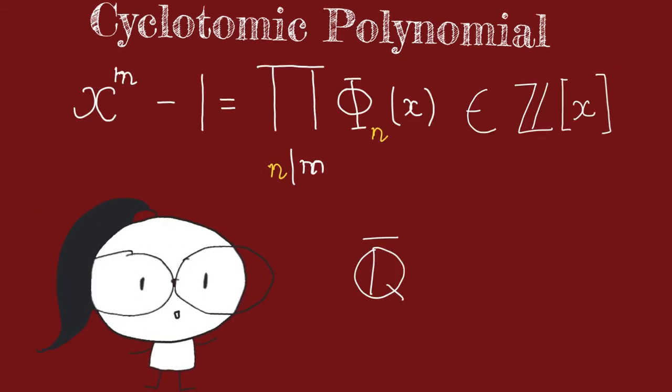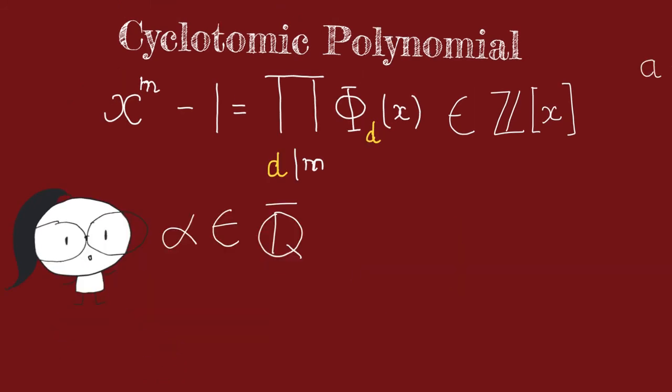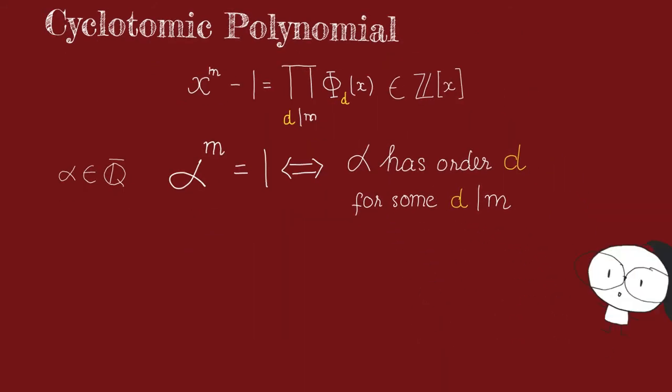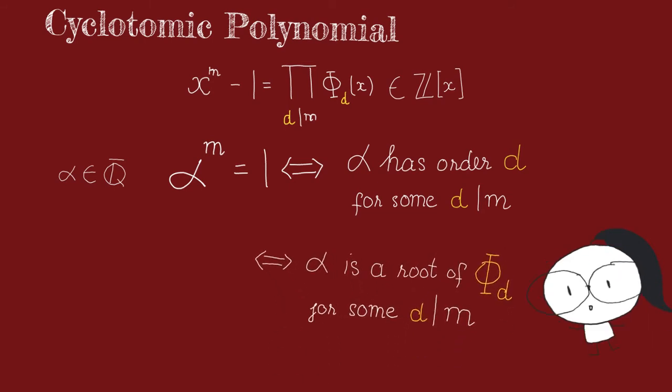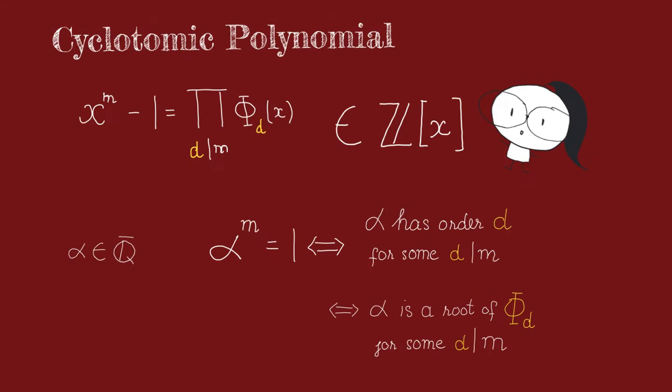This is because the right hand side and the left hand side have the same roots over q bar. Observe that an element alpha of q bar is the root of the right hand side if and only if it has order dividing m. But from what we just said about q bar, that is just equivalent to saying that alpha is the root of some d-cyclotomic polynomial for some d dividing m. Thus we have this factorization over zx.